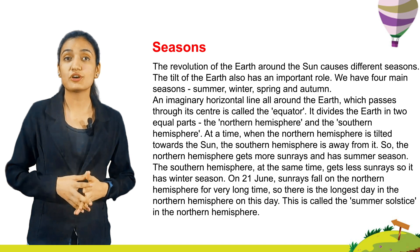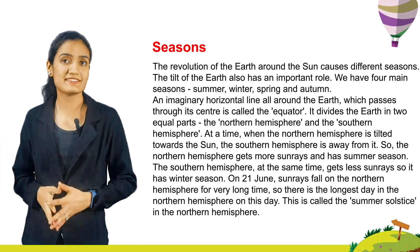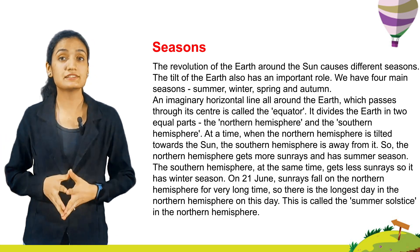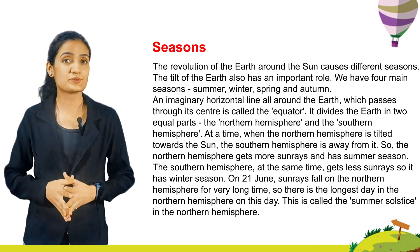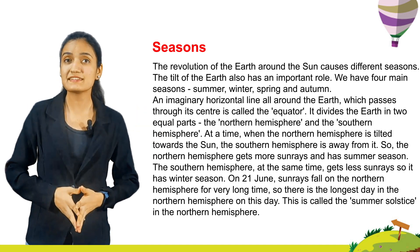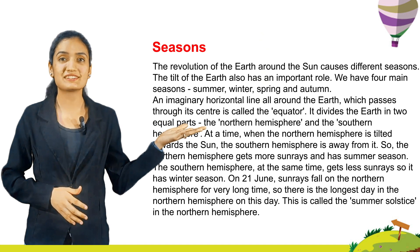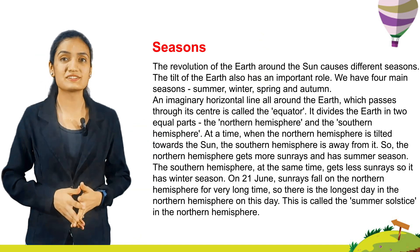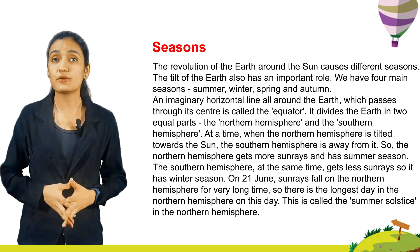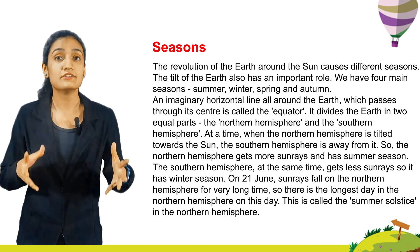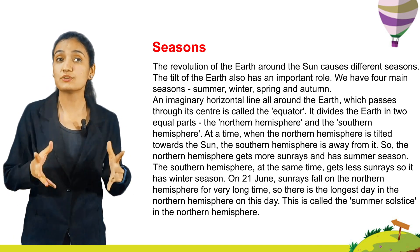The revolution of the earth causes different seasons. The tilt of the earth also has an important role. We have four main seasons: summer, winter, spring and autumn. An imaginary horizontal line all around the earth which passes through its center is called the equator.